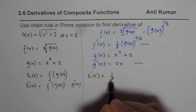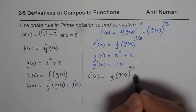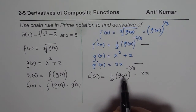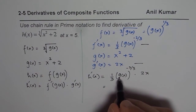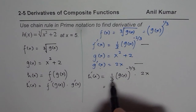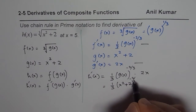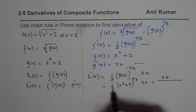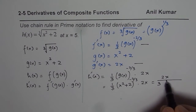So what we get is 1/3 times g(x) to the power of minus 2/3, times 2x — the derivative of g(x). Now replacing g(x) with x squared plus 2, we get 1/3 times (x squared plus 2) to the power of minus 2/3, times 2x. This simplifies to 2x over 3 times the cube root of (x squared plus 2) squared.